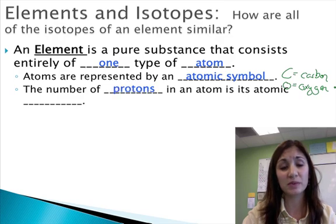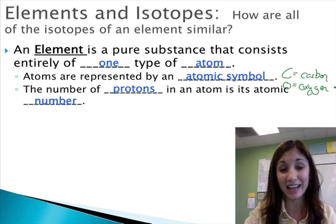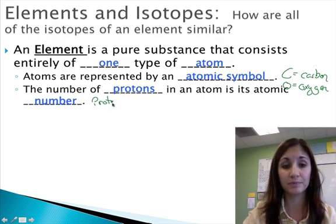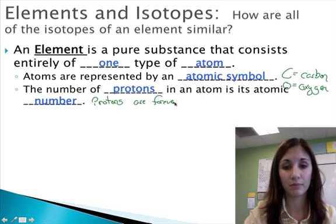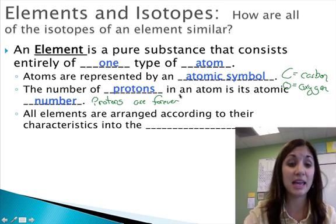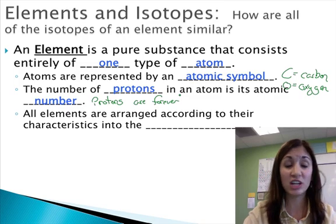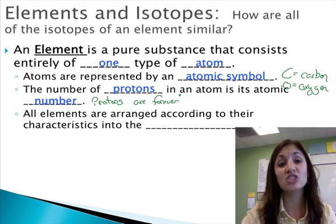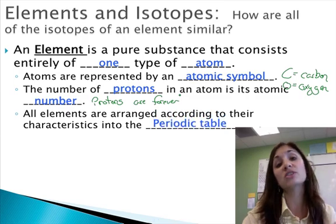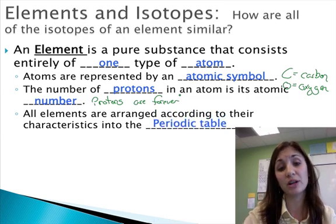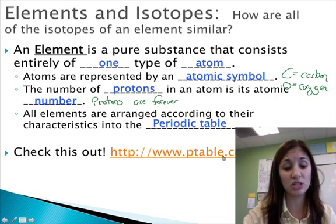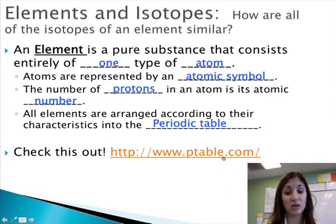Now, the number of protons in an atom is its atomic number. It's what defines it. Protons are forever. Remember that electrons, neutrons, they can change. They can be variable. And all of these elements, all 92 that occur naturally in nature, and even those that we manufacture artificially, are arranged into that periodic table, which shows their different trends and chemical properties. This is a great periodic table for you to go and check out.